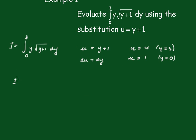So now i equals the integral from 1 to 4. Now here y equals u minus 1, and the square root of y plus 1 is replaced by the square root of u, times du.